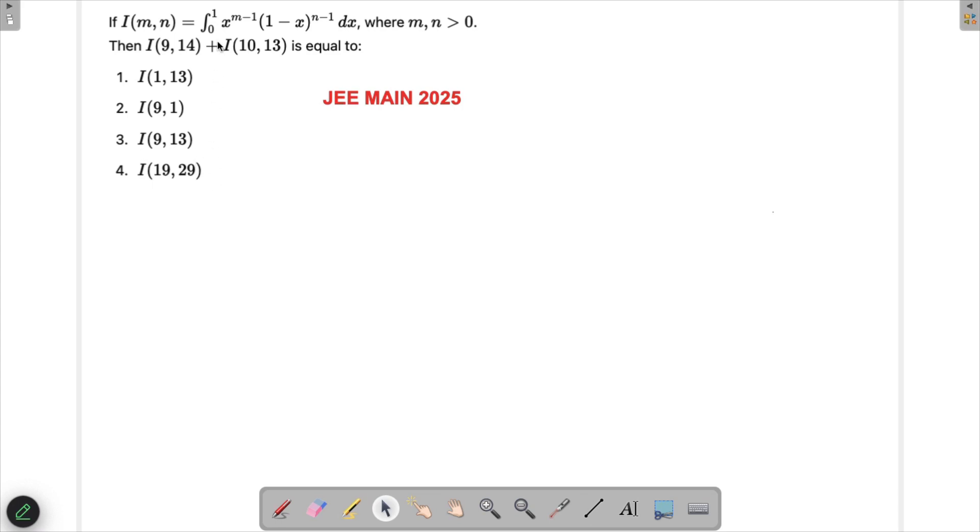When we look at it, we may think we should solve this integration, but we're not sure how to solve this. Though this particular integration is called a beta function, without knowing that and what is the integration, we can still solve this by just substituting the values given to us.